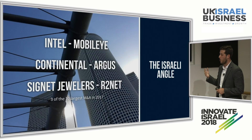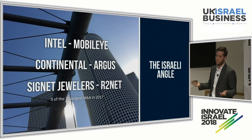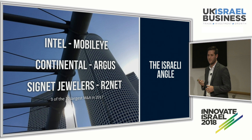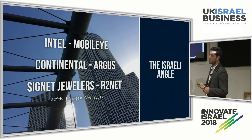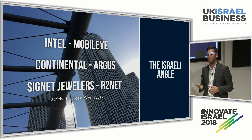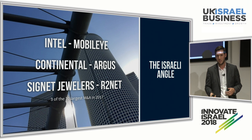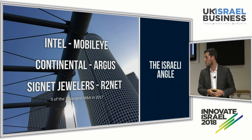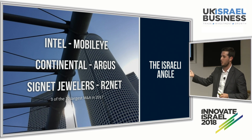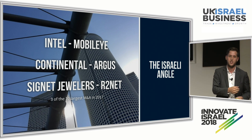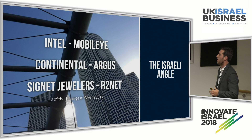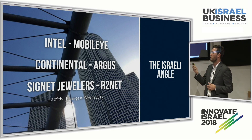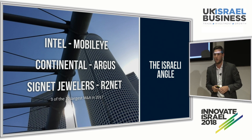From a brief Israeli perspective, if we look at 2017, we're seeing that three of the largest ten M&A acquisitions were cross-acquisitions. We saw Intel going into Mobileye in the automotive space, we saw Continental acquiring Argus, and we saw Signet Jewelers acquiring R2Net.